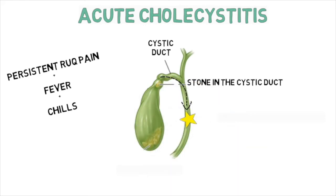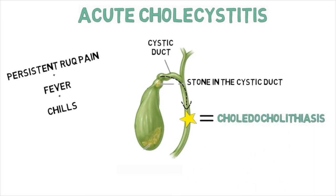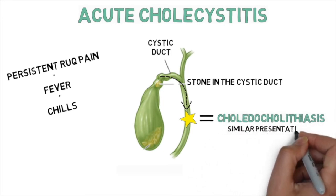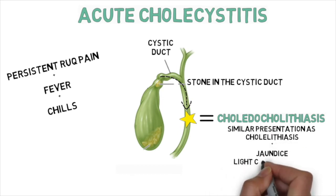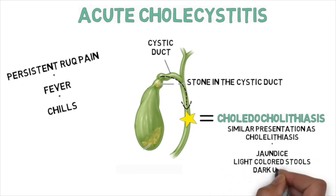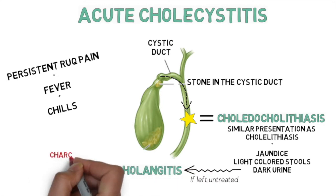If the stone from the cystic duct moves down into the common bile duct and causes obstruction, this is called choledocholithiasis. It has a similar presentation to cholelithiasis, but these patients will also have jaundice, light-colored stool, and dark urine. If not treated in a timely manner or if the stone doesn't pass on its own, it can result in infection of the stagnant bile, eventually leading to cholangitis.